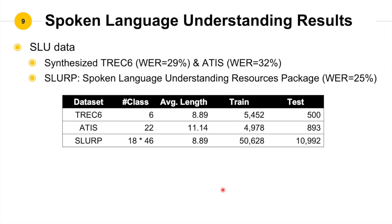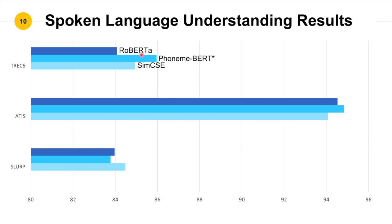We verify our results based on three datasets. SNIPS and ATIS are synthesized versions with word error rate around 30%. SLURP is another challenging SLU corpus with a wide variety of domains and a larger scale. We compare our method with three baseline models: the first is RoBERTa without any modification; the second is PhonimBERT, which utilizes additional phoneme sequences appended after the original text and uses the masked language model to adapt the pre-trained model; and the third is SimCSE, the contrastive learning baseline, which uses two forward passes of the same input as the positive pair.